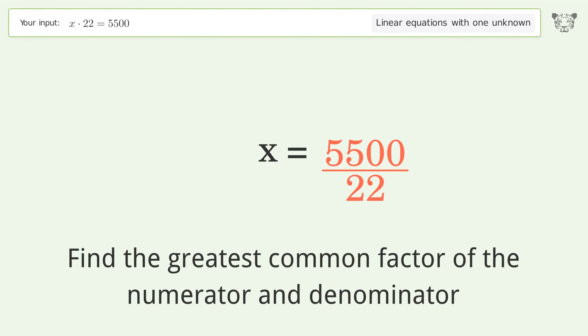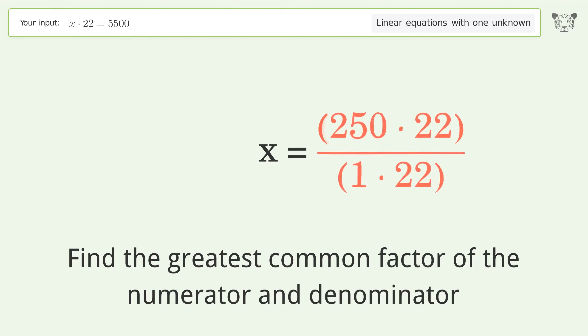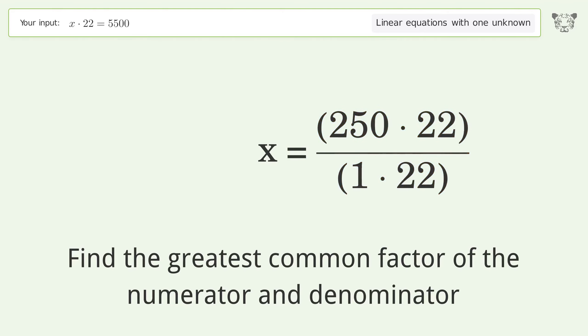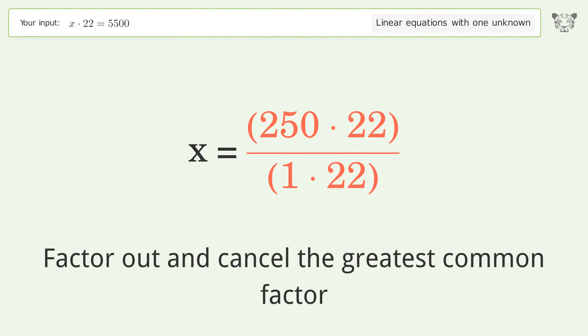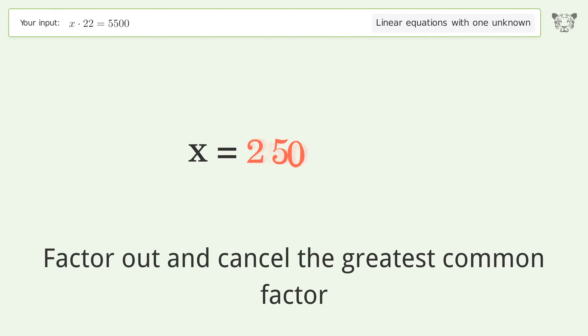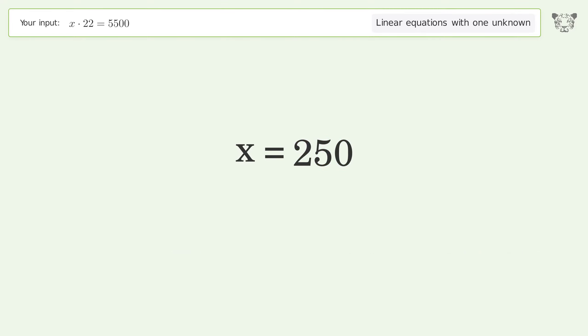Find the greatest common factor of the numerator and denominator. Factor out and cancel the greatest common factor. And so the final result is x equals 250.